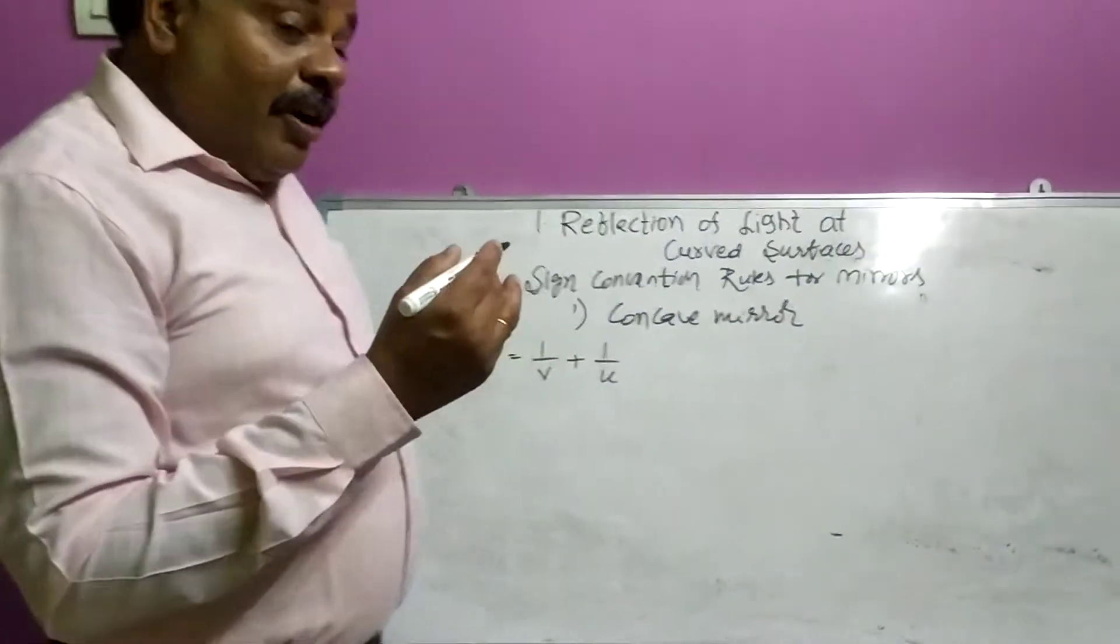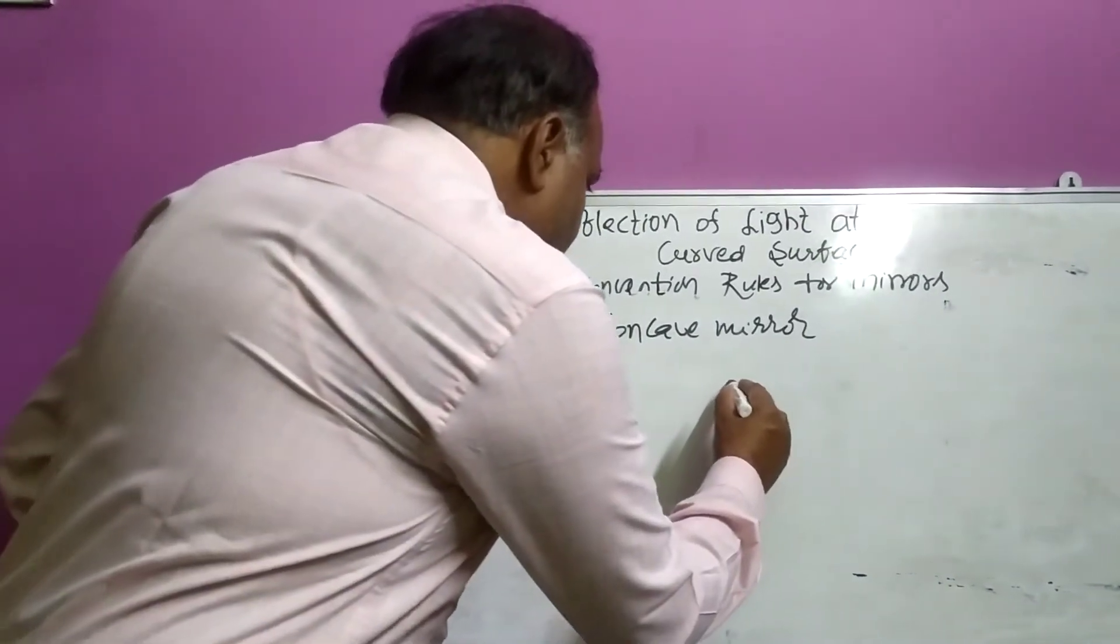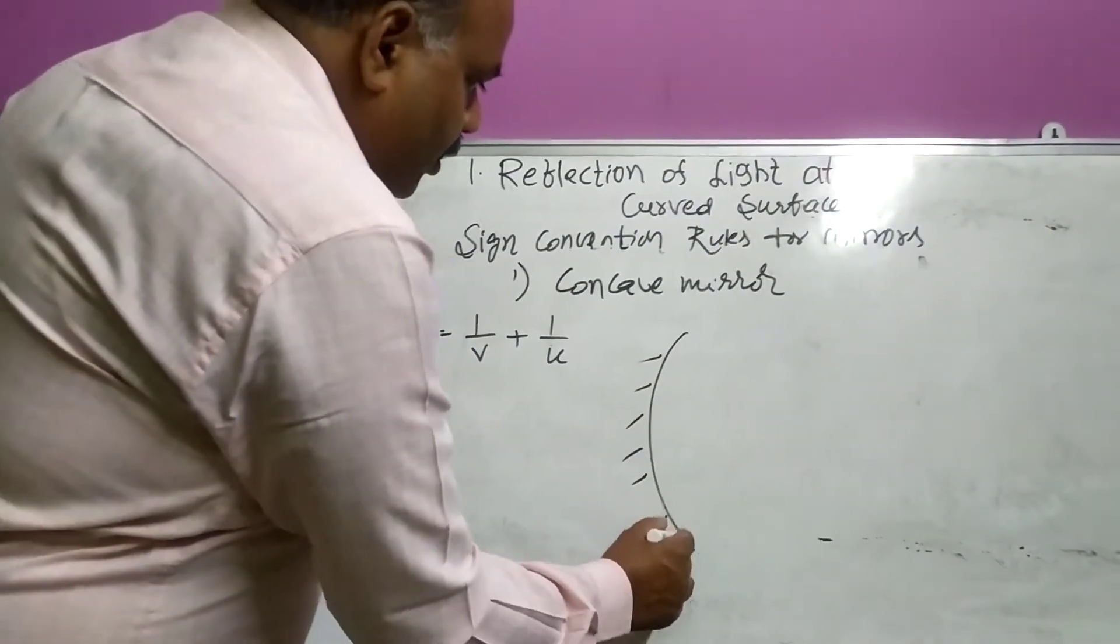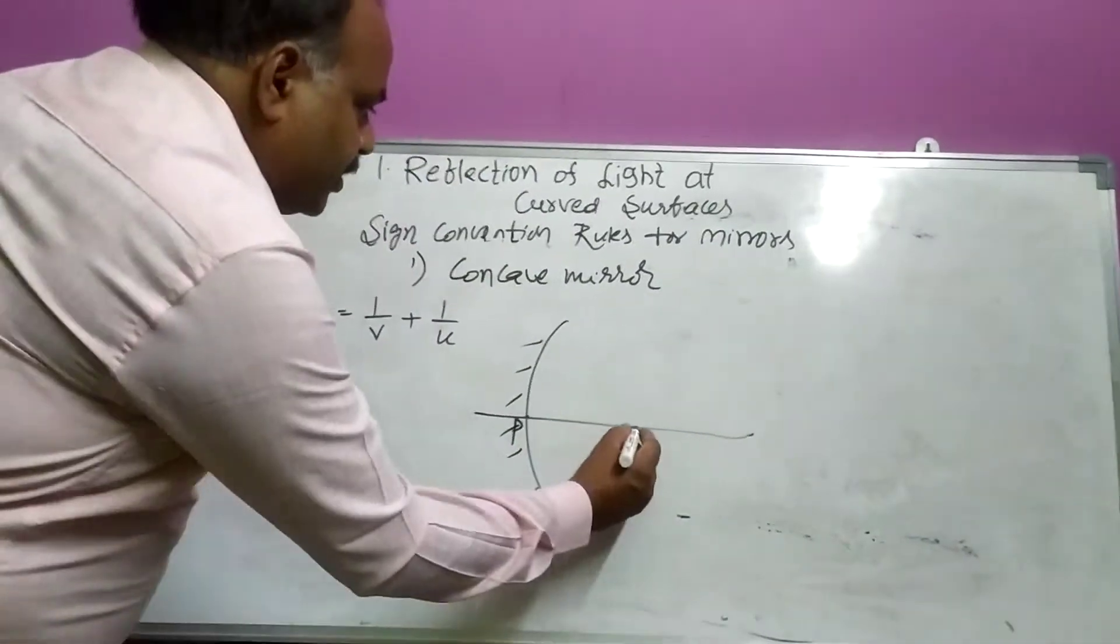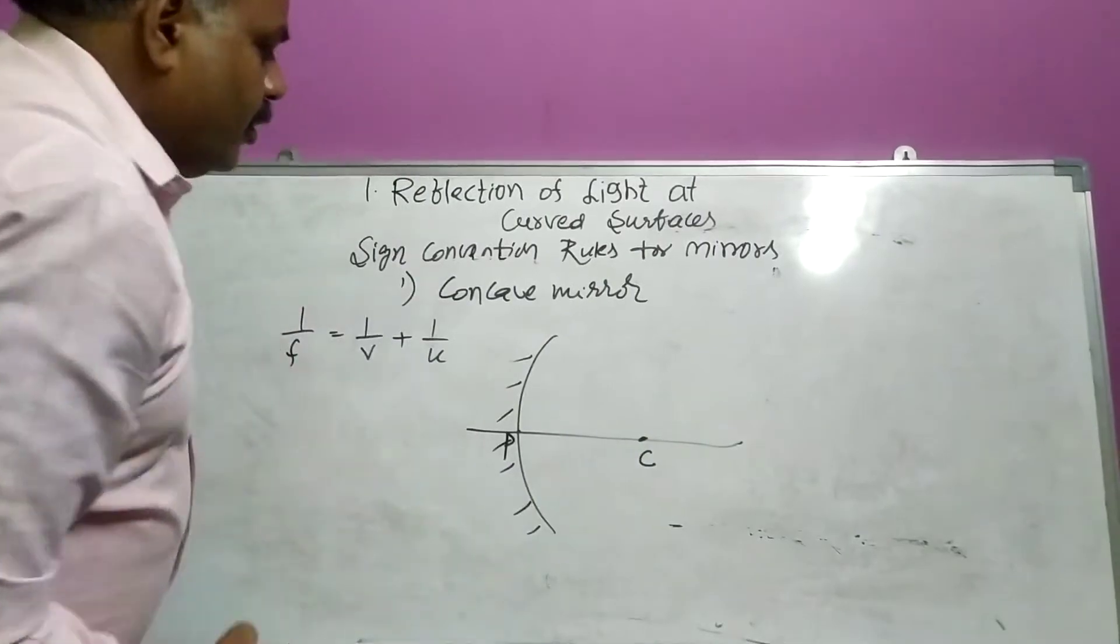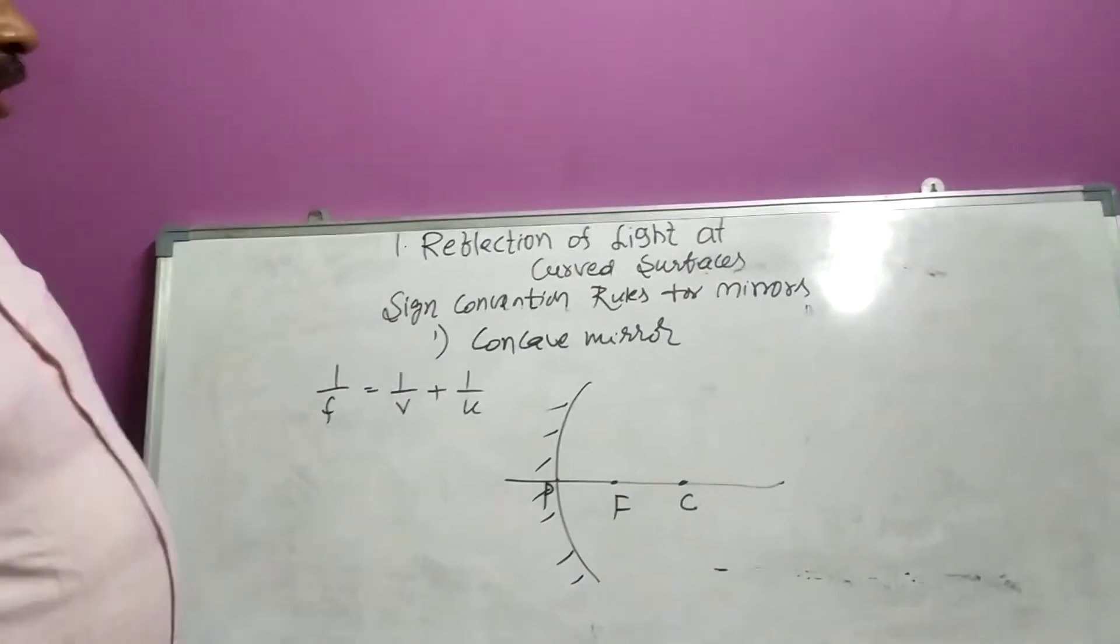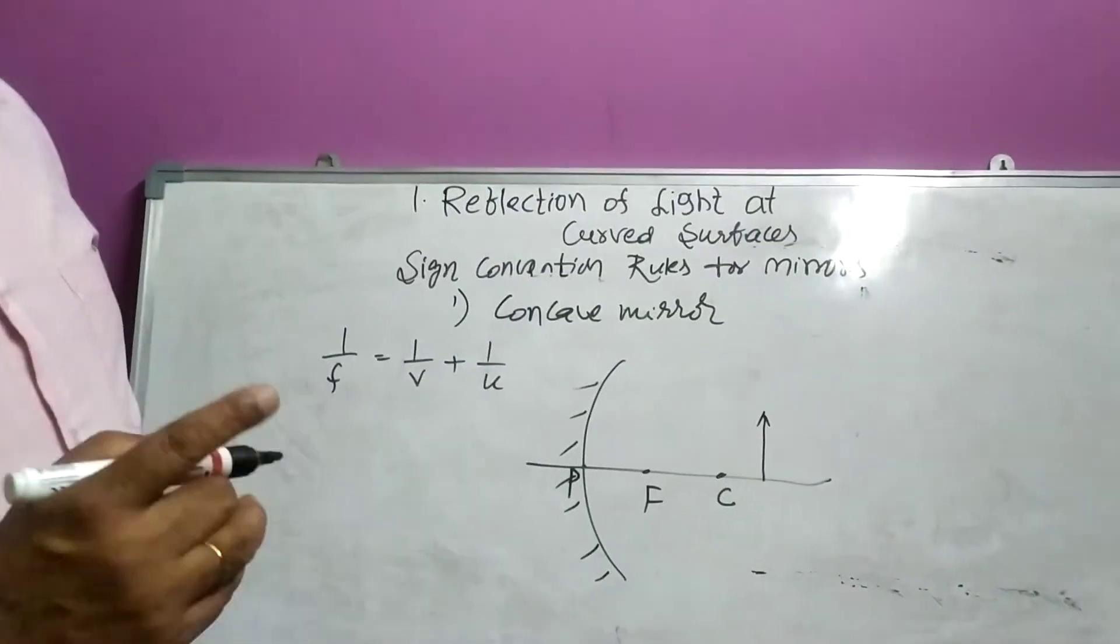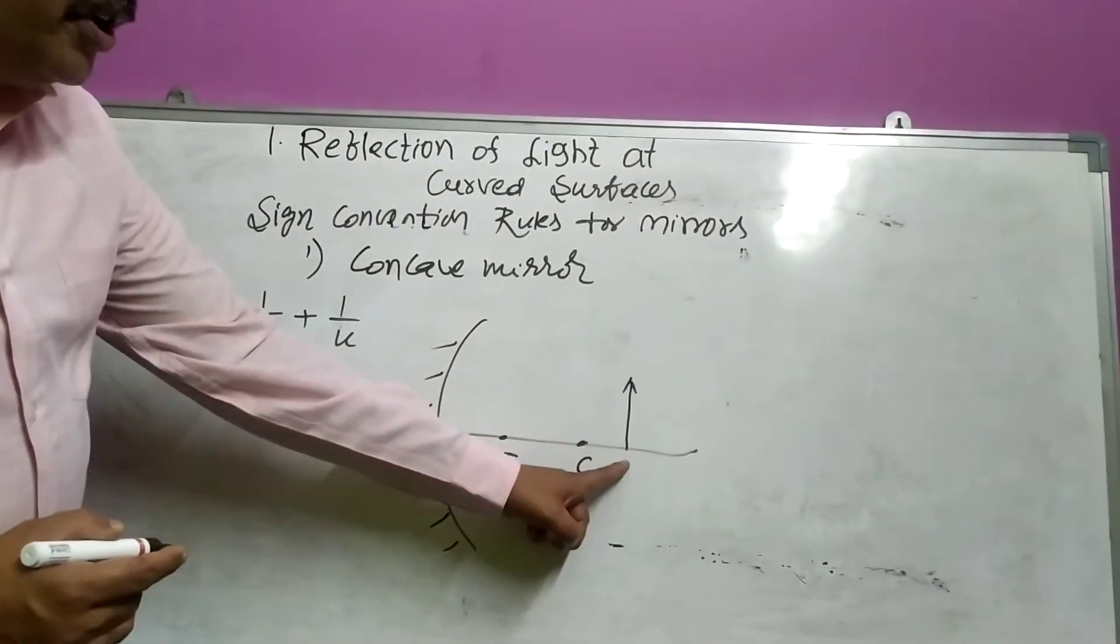So, now I am taking particular situation for this concave mirror. Look here, concave mirror. This is pole, principal axis, C and F. Now, I am taking an object beyond C. All we know ray diagrams. When object is kept at beyond C,